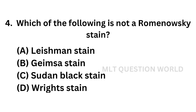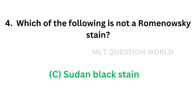Question number four: Which of the following is not a Romanowski stain? Option A: Leishman stain, Option B: Giemsa stain, Option C: Sudan black stain, Option D: Wright stain. The correct answer is Option C — Sudan black stain. Sudan black stain is not a Romanowski stain.